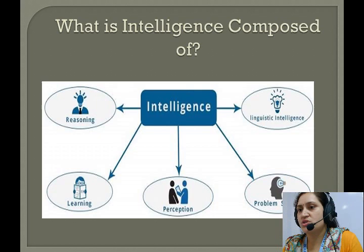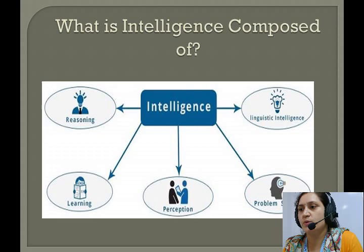Now basically when we talk about intelligence, the intelligence is composed of five components. The first one is reasoning, second is learning, third is perception, fourth is problem solving, and the fifth one is linguistic intelligence.